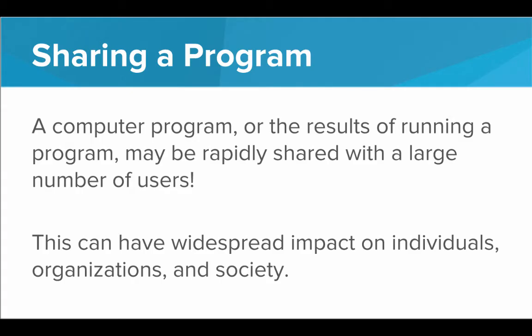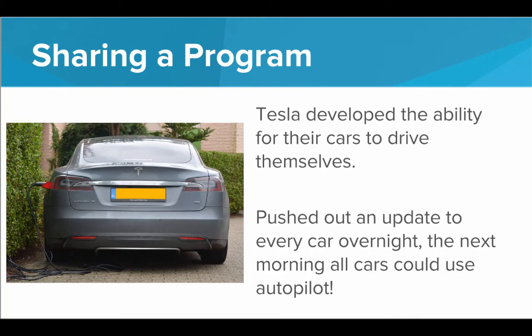Another great feature of programs is that once a program is made, the program itself — or the results of running it — can be rapidly shared with a large number of users, and this rapid sharing can have widespread impact on people, organizations, and society. For example, Tesla spent a long time developing software that allowed their cars to drive themselves. Once the software was ready and tested, Tesla pushed out an update to every car overnight, and the next morning all Tesla cars were able to autopilot. It's not a physical product you need to ship across the country — it's an idea that can be downloaded by computers across the globe, and instantly everyone has access to it.